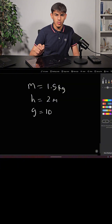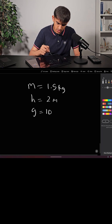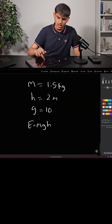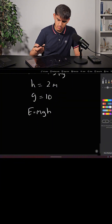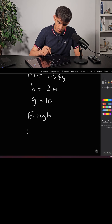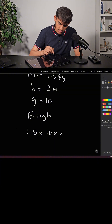The formula to calculate gravitational potential energy is E equals mgh. So literally what we'll do is 1.5 times 10 times 2.